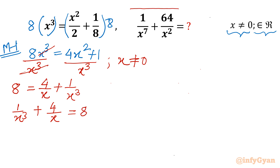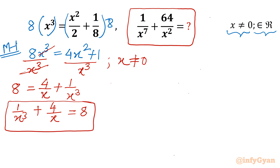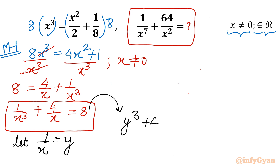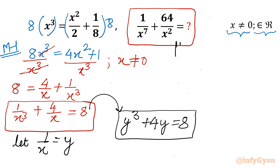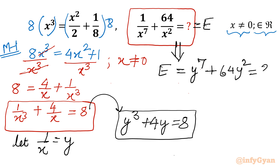If you notice, both the expression we need to evaluate and this equation involve x only in the denominator. So it's better to use substitution: let y = 1/x. Our equation then transforms into y³ + 4y = 8. Let's call our expression E, so E = y⁷ + 64y².